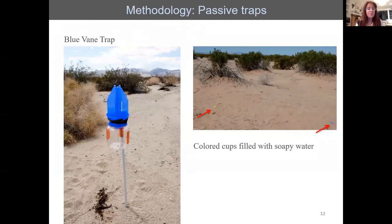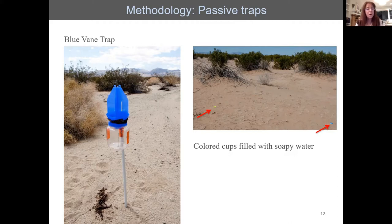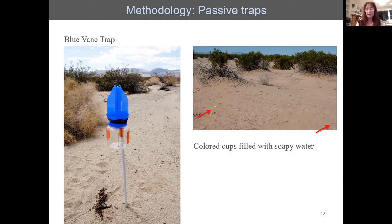This is what a blue vane trap looks like, and the small colored bowl traps are filled with soapy water or propylene glycol — both non-toxic. The bees are attracted to the blue color, fly in, and get trapped. The traps are left out for the day and collected at the end of the day.